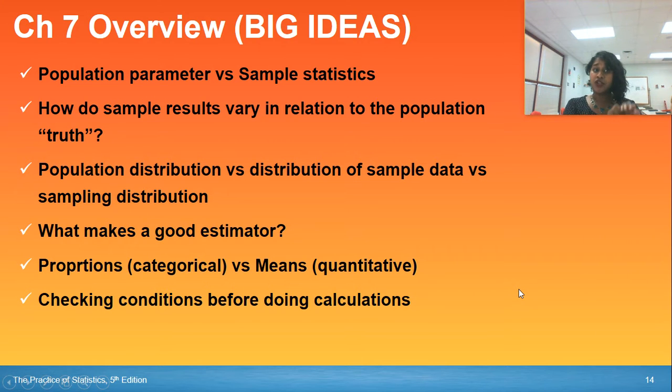I've got two conditions. First is the 10% condition. My sample size can be no bigger than one-tenth of the original population size. And then my other condition is the large counts condition. My NP value or my N times one minus P value, but my sample size times my proportion value should be bigger than 10, at least 10 or larger. And the sample size times the opposite proportion, one minus P, has to also be bigger than or equal to 10.